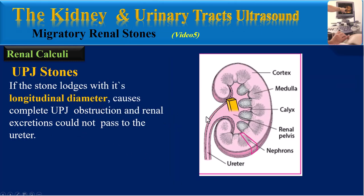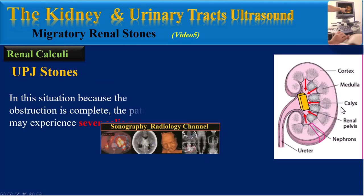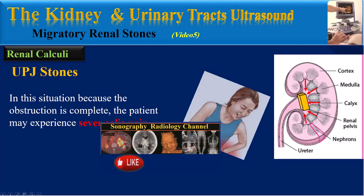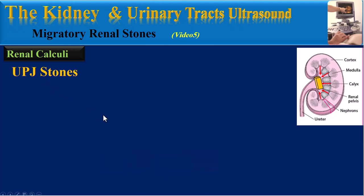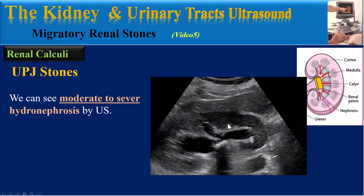In another situation, if the stone's longitudinal diameter causes complete UPJ obstruction, as you can see here, renal excretions could not pass to the ureter. In this situation, because the obstruction is complete, the patient may experience severe colic pain.